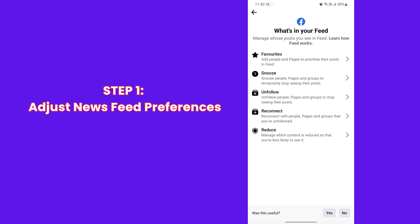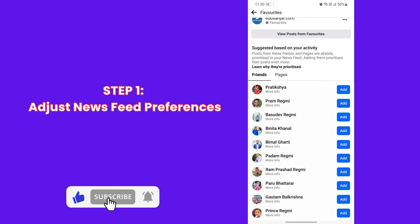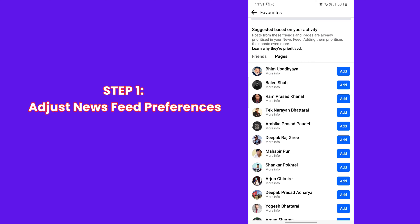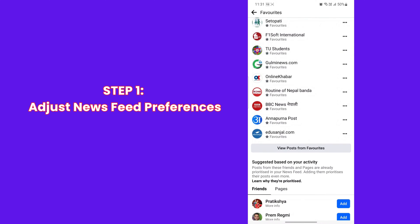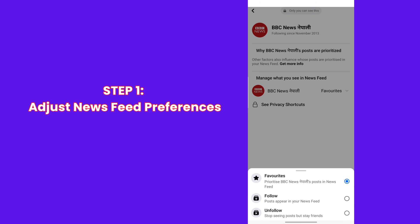From here you can manage Favorites, Snooze, Unfollow, Reconnect, and Reduce. Under Favorites, you can select people and pages you want to see higher in your feed — their latest posts will appear closer to the top so you don't miss them. You can add new people, pages, or groups to your favorites list, remove previously added favorites, and also unfollow them.